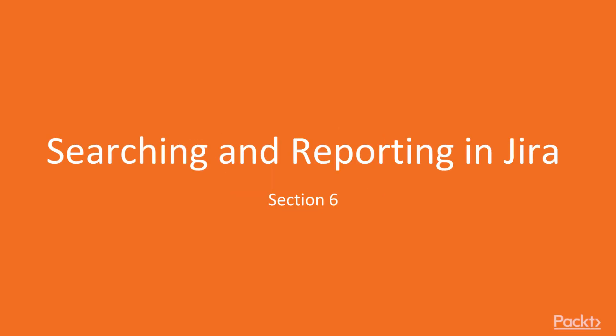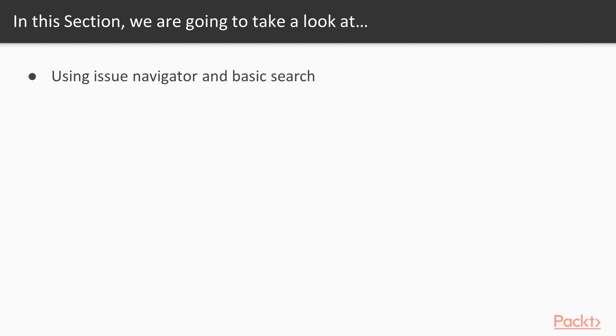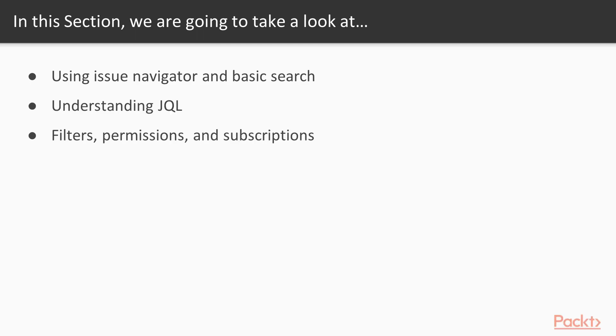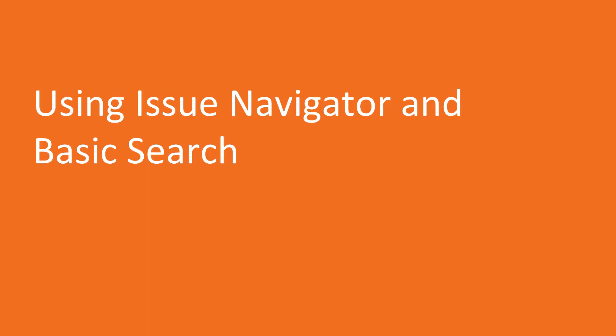In the previous section, we discussed setting up a helpdesk using Jira's service desk. Let us now take a look at searching and reporting in Jira. In this section, we are going to look at using the issue navigator and basic search, understanding JQL, filter permissions and subscriptions, and finally dashboards.